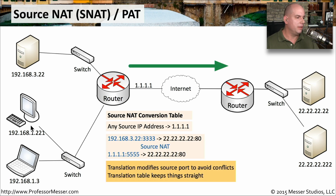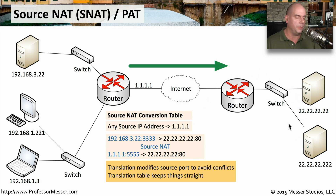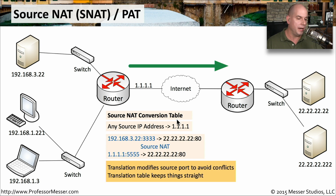In this picture, we have a network on the left side — this is where we're starting with our source NAT example. We might be one of these devices like the 192.168.3.22, communicating through a switch. This router is the one that is going to be performing the address translation, and its external IP address that the rest of the world sees is 1.1.1.1. Inside this router is a source NAT conversion table, and we've told this device that if anything is passing through to the outside, take any of these internal source IP addresses and translate them to 1.1.1.1.